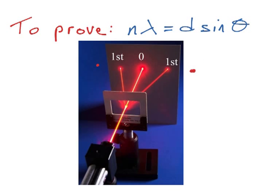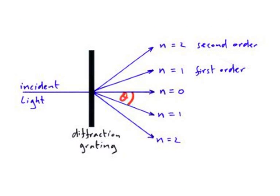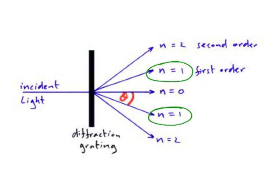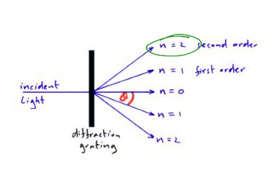The second order images are another pair of red dots appearing to the left and right, just not labelled in that diagram. It continues with third order, fourth order, and so on. Looking at a top-down view, the incident light ray comes from our laser, hits the diffraction grating, and we get the zero order image travelling straight through. The first and second order images appear to the left and right.